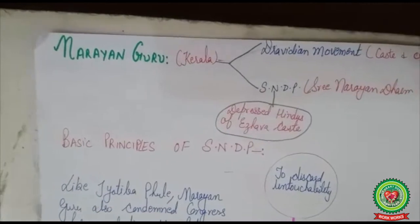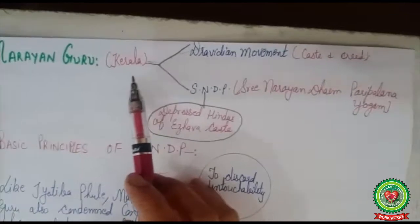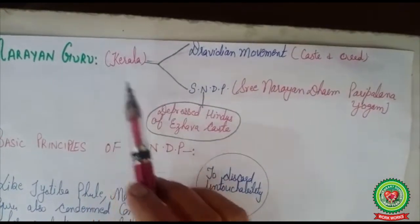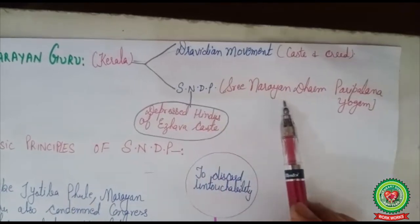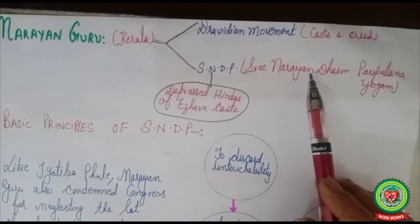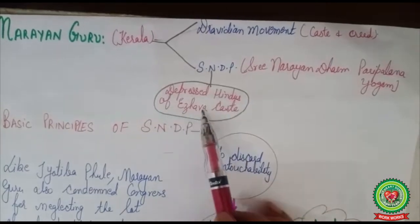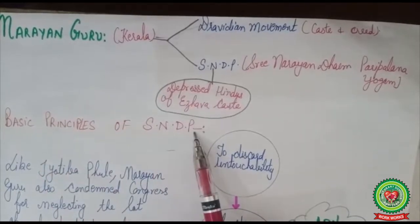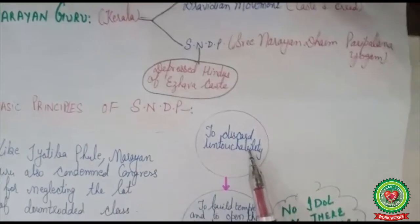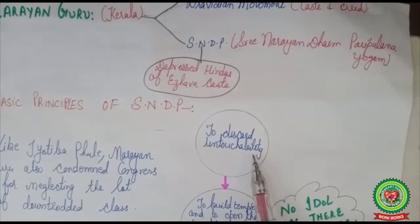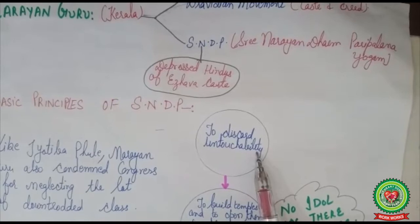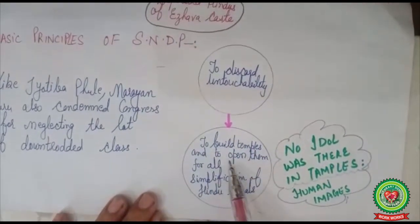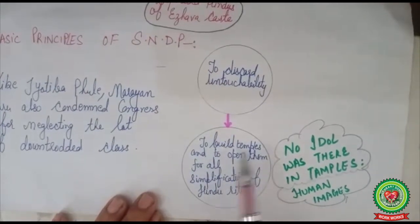Now we will discuss the contribution of Sri Narayan Guru. He started a reform movement in Kerala, where there was already a Dravidian movement working against caste. Sri Narayan Guru started a movement specifically for the depressed Hindu people of the Izhava caste, to which he himself belonged. The basic principles of his organization, the SNDP — Sri Narayan Dharma Paripalana Yogam — were that he discarded untouchability, saying all human beings are born equal and there is no discrimination among them by God, so human beings should not discriminate on the basis of caste.